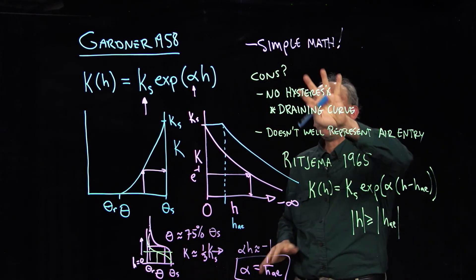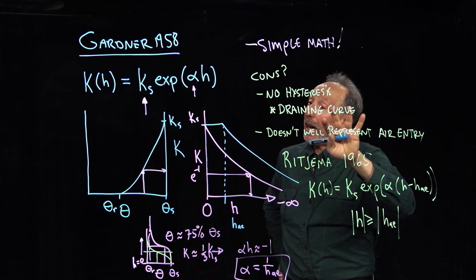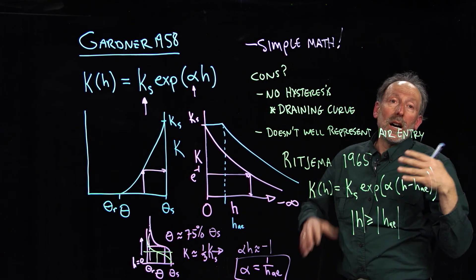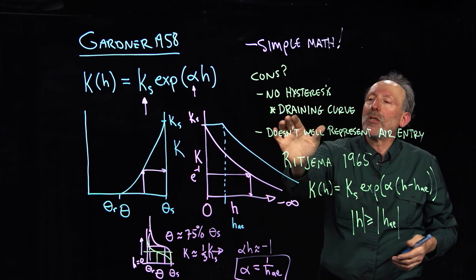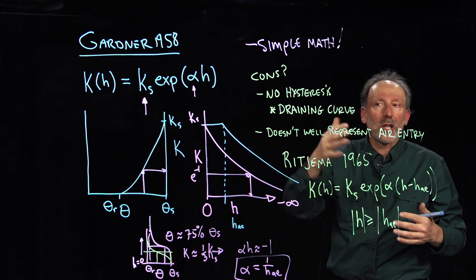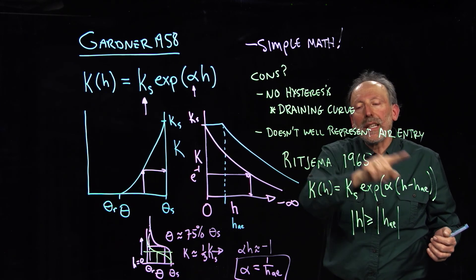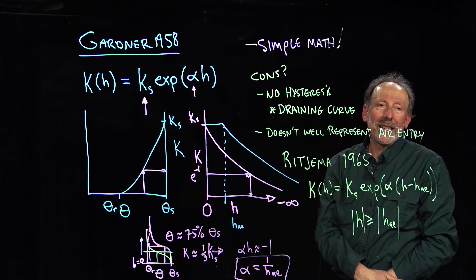So it's wonderfully simple, it's easy to get the parameters, but it does not well represent hysteresis, because we're saying that conductivity is a function of the pressure, which we know it's really a function of moisture content. And so we have to use it for a specific curve, it has to be calibrated just for the draining curve, for example. And also, it does not represent the air entry, but that can be fairly easily fixed by adding one more parameter, as Ritjema did in 1965.